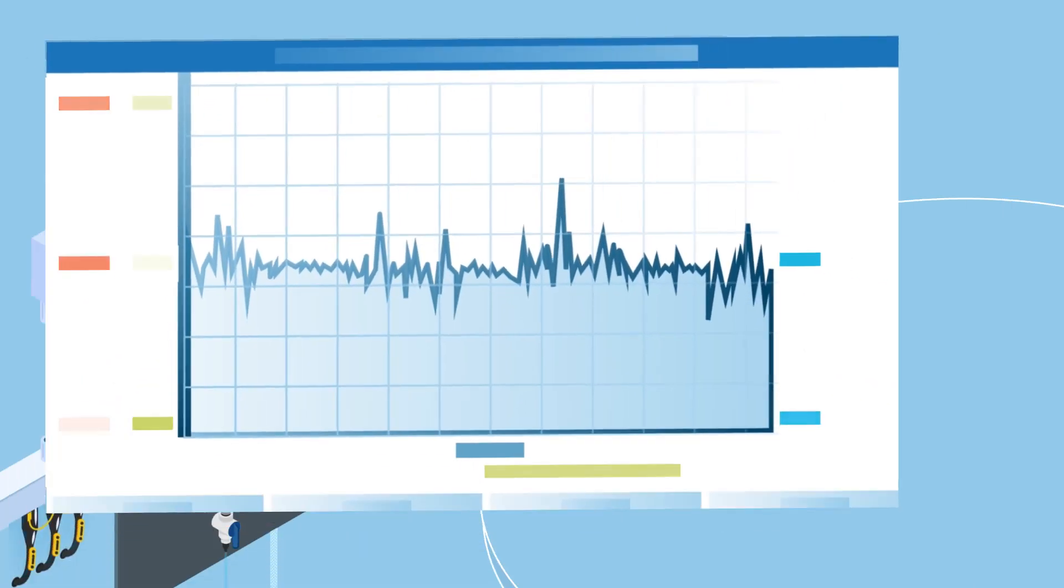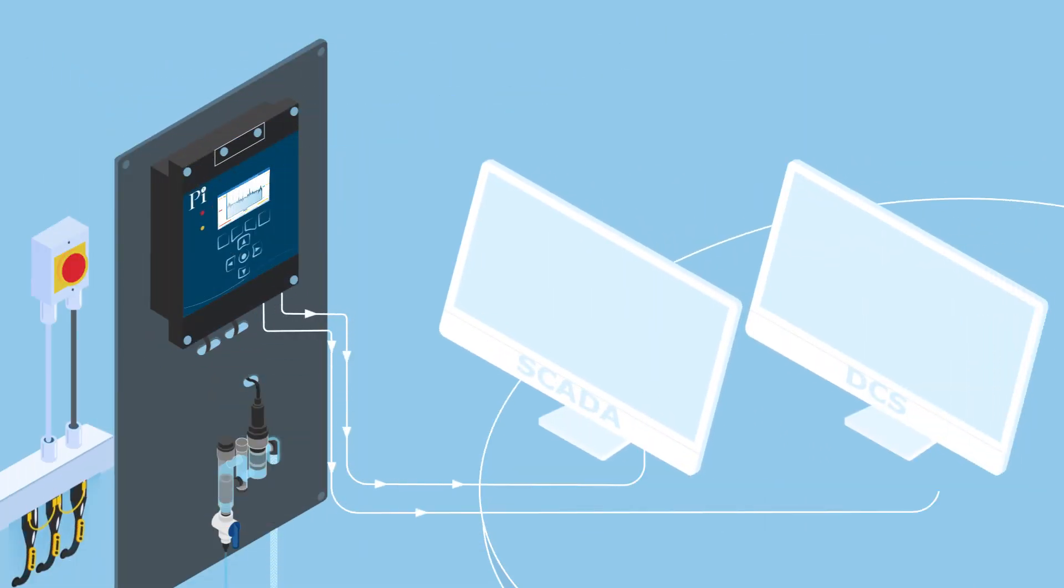In addition, Cryos features relays and digital inputs with onboard data logging as well as a host of digital communications to output to SCADA and DCS systems.